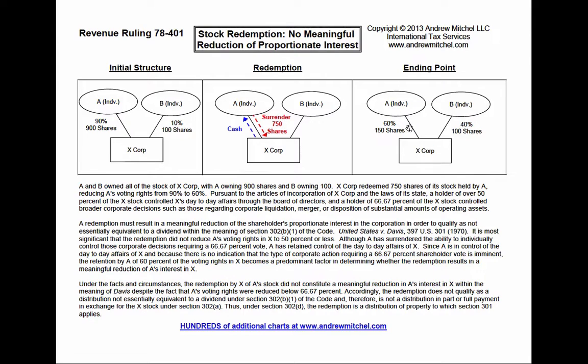After the redemption, A owned 150 shares and B owned 100 shares. So A owned 60% of the shares of Corp X and B owned 40% of the shares of Corp X.